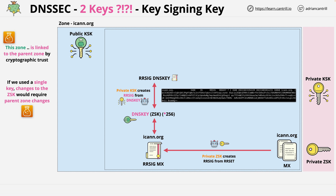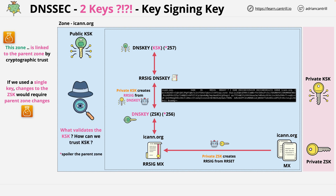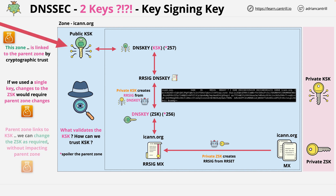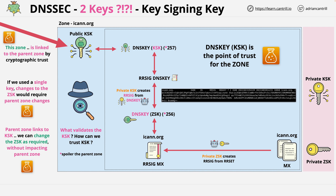We store the public part of the key signing key in the DNSKEY record set. But now we have a new problem: how can we trust the key signing key? It's referenced from the parent zone — in this case .org. The DNSKEY record set stores both zone signing and key signing public keys. This is the main point of trust for the zone — this is how trust is conveyed into the zone. Because the parent zone links to the public key signing key of our zone, and assuming we can trust the .org parent zone, because it references our zone's key signing key we can trust our zone's key signing key. This key signing key signs our zone signing key, and the zone signing key signs all of the RR sets to create RRsigs. We have a chain of trust between two different layers of DNSSEC.